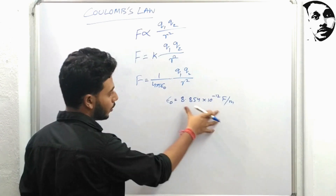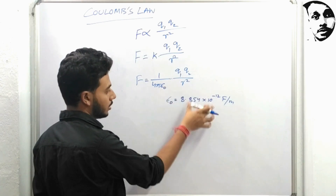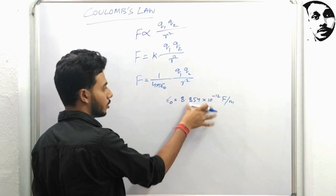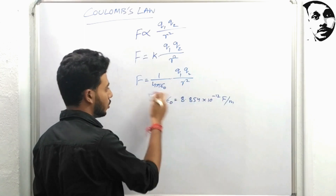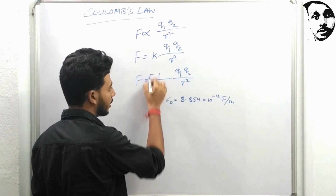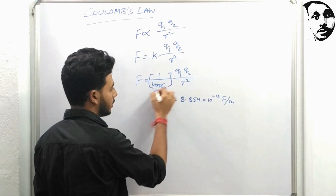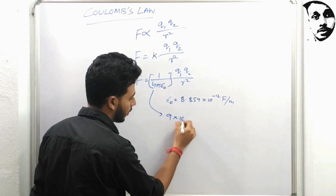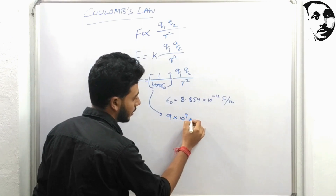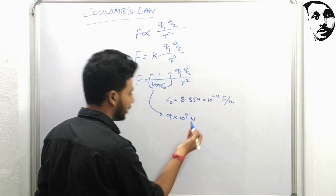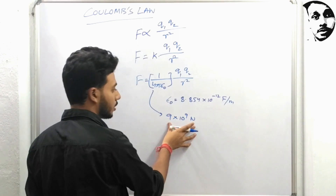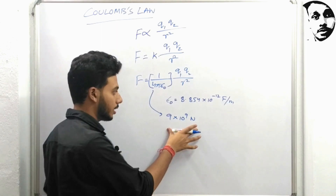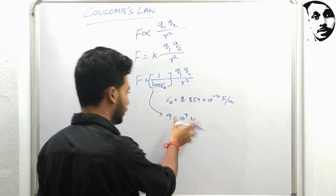If we put the value of epsilon zero into the expression, we get K equal to 9 × 10⁹ Newton, which is also known as Coulomb's constant.